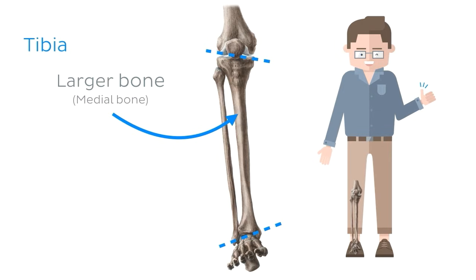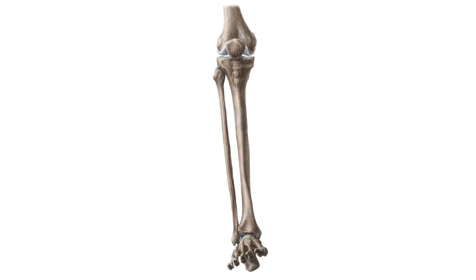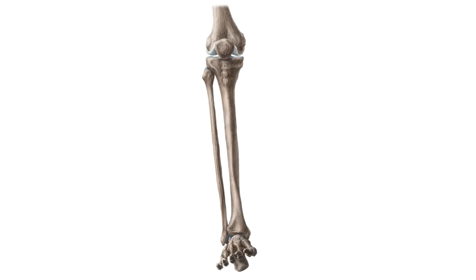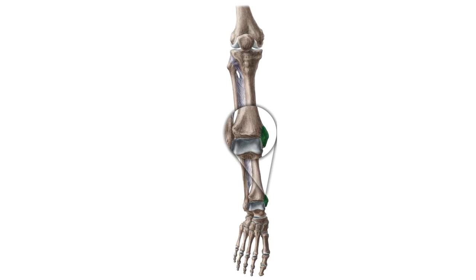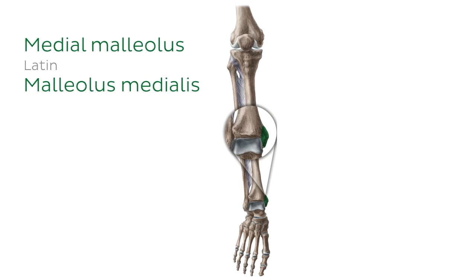The tibia is the medial of the two bones of the leg. Since the tibia is the medial bone of the leg, this must be the right lower limb we're looking at. In this image of the foot and inferior portion of the leg from a medial viewpoint, the bone highlighted in green is the tibia. At the distal end of the tibia, there is a bony projection on the medial side called the medial malleolus.